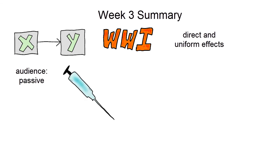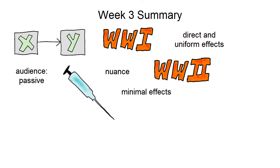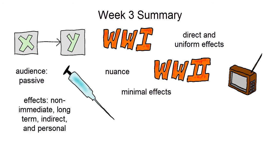Later, this belief in the power of the media became more nuanced. When scientific studies failed to prove the all-powerful media hypothesis, this led to the more skeptical minimal effects hypothesis. But World War II and the rise of television clearly showed that mass communication indeed could have huge effects under some circumstances. It was now appreciated that effects were not always direct, uniform, and short term, but quite often non-immediate, long term, indirect, and different from person to person.